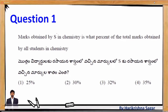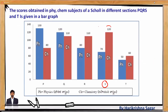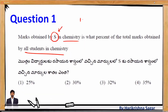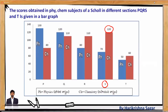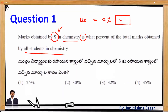The first question: marks obtained by S in chemistry is what percentage of the total marks obtained by all students in chemistry? Section S got 120 marks in chemistry. For the total, sum all chemistry scores: P = 80, Q = 110, R = 110, S = 120, T = 60. So 80 + 110 + 110 = 300, then 300 + 120 = 420, and 420 + 60 = 480. Total chemistry marks = 480.